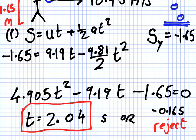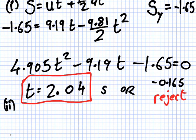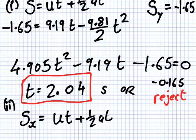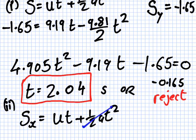Now part two is what is the horizontal distance traveled? So that is SX. What's the formula for S? The same formula. UT plus a half, yeah, but there's one key difference here. A is zero. Oops, A is zero horizontally. No acceleration. What's the U? It was 10.95. And then what's the T? 2.04.